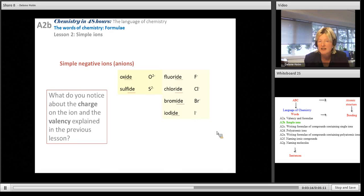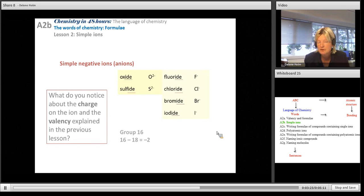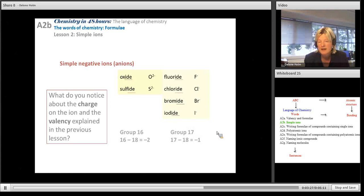Group 16 has a valency of 2 and a charge. If it's got to charge the ion, it'll be negative 2. Here we just say 16 subtract 18 is negative 2. And group 17 is 17 subtract 18 is negative 1. Anions are always negative.